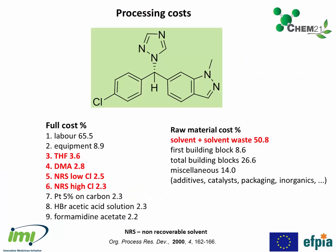It's always important to evaluate all costs when designing a route to an API to ensure that the product is produced at an economically attractive price. For simple molecules, plant labour and equipment costs tend to dominate the full product costs, and solvent and treatment costs are relatively small. However, if we consider just the raw materials to make the product, the solvent and disposal costs can be the biggest contributors. So in terms of minimising environmental impact, it's vital to think about which solvents we use and reduce the amount — this can also be a major contributor to the cost of the product.